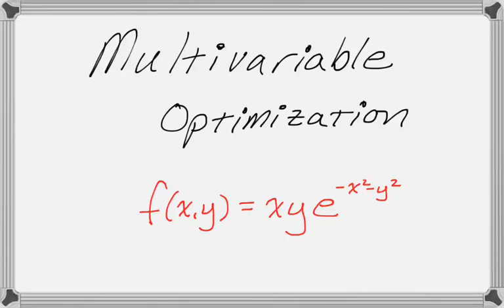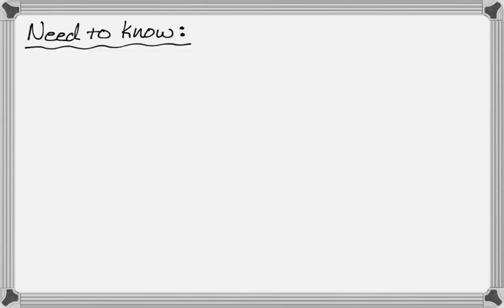In this video we're going to do a multivariable optimization problem. We're going to find the relative maximums, minimums, and saddle points of f(x,y) = xy·e^(−x²−y²). There's kind of a lot of algebra in this problem, so let's see what we need to know before we dive into that.